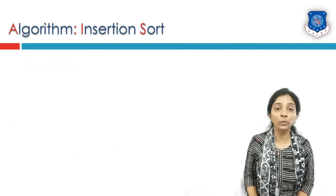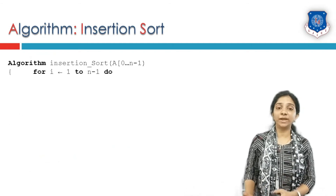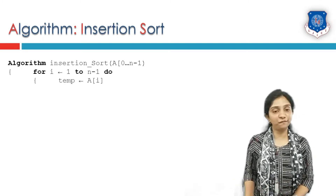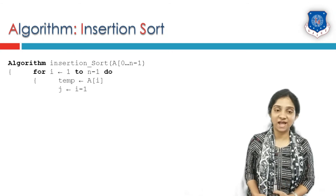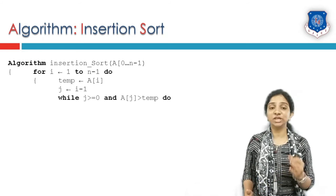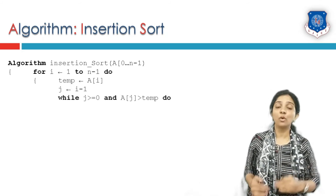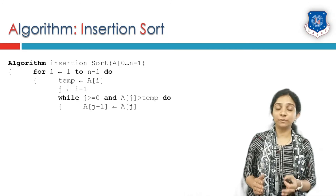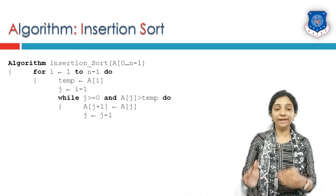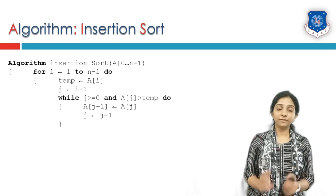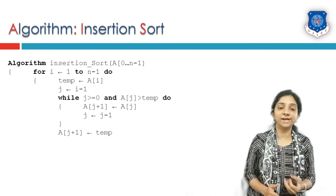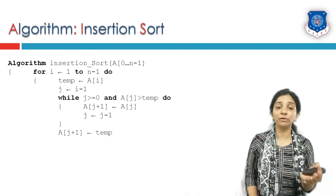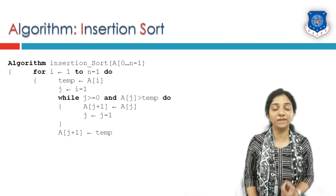So this is how insertion sort works. From index 1 to the n minus one-th element, we initialize temp as the element at i, then j is initialized as i minus one. Unless j is greater than or equal to zero and the element at j is greater than temp, we copy the j-th element to the j plus one location and decrement j by one. After the while loop ends, we copy temp to the j plus one location — because if j has gone one step below zero, j plus one will be zero or some valid larger position.